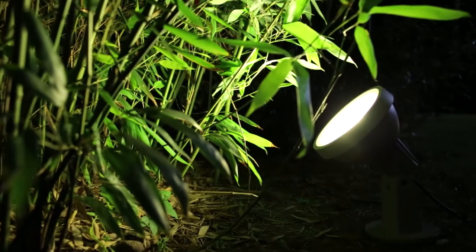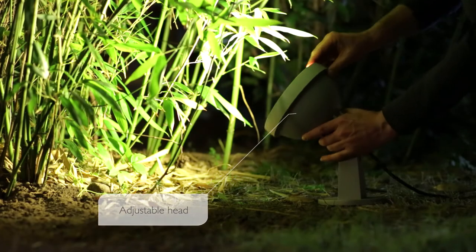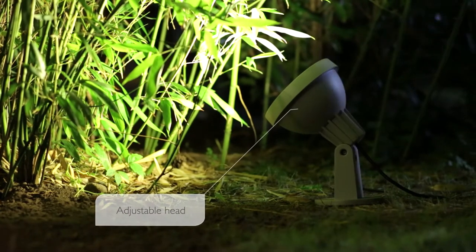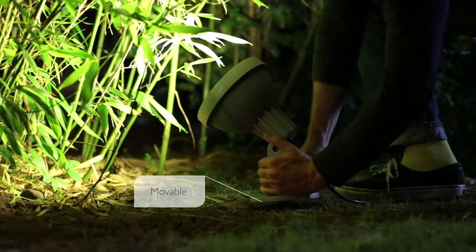A Philips MyGarden spike light makes it easy to create nice light effects in the garden. It gives you the flexibility to direct the light where you want it. You can easily move it when you want to accentuate a different part.